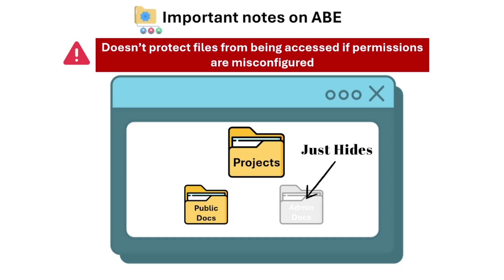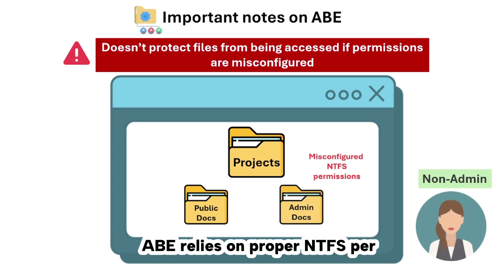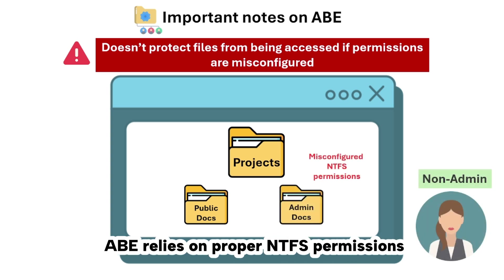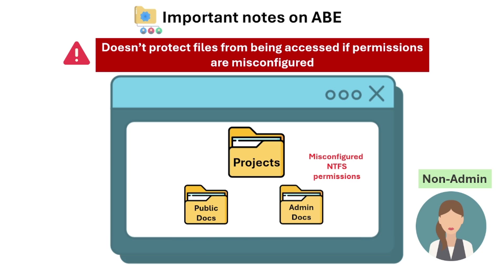ABE doesn't protect files from being accessed if permissions are misconfigured. ABE just hides — it doesn't secure. Always double-check your permissions; ABE will not save you from misconfigurations. ABE relies on proper NTFS permissions. If you accidentally give a user access to a sensitive file, ABE won't stop them — it will show the file because the system thinks they are authorized.